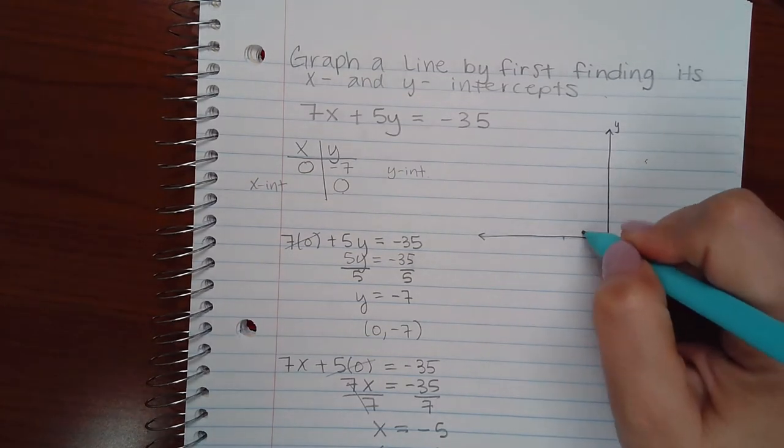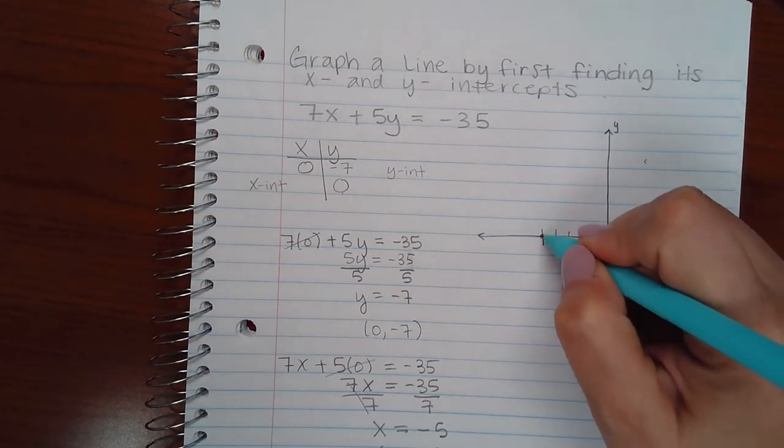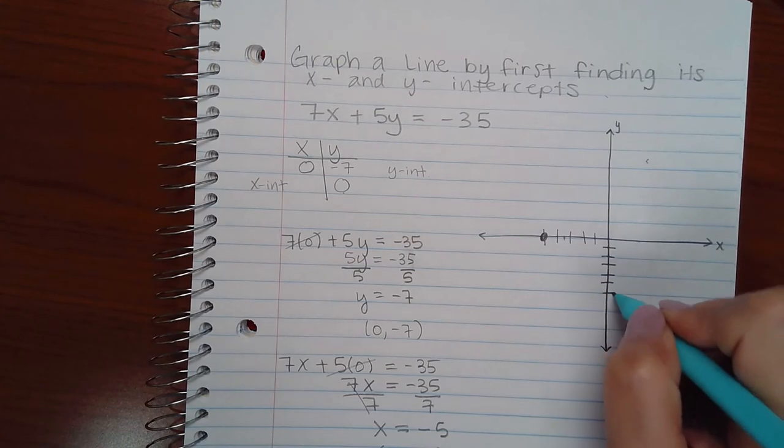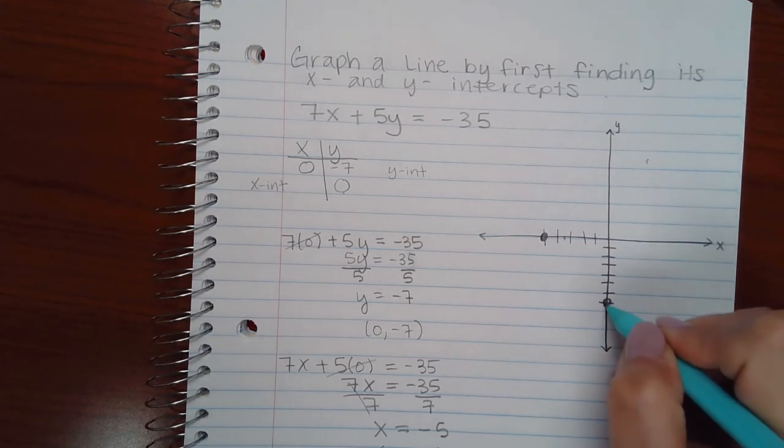Counting to negative 5 on the x-axis, here's my x-intercept. Counting to negative 7 on the y-axis, here's my y-intercept.